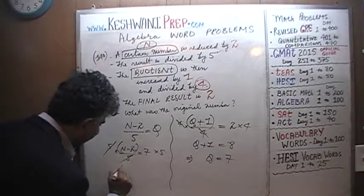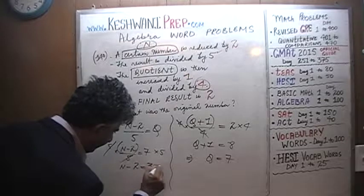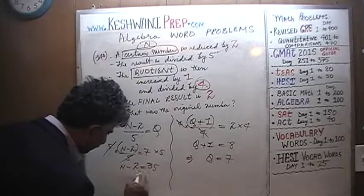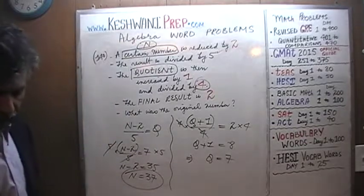And then the 5 would go away, and we find that N minus 2 must equal 7 times 5, which is 35. And when we add the 2 to both sides, we find that N equals 37. That's all there is. N equals 37.